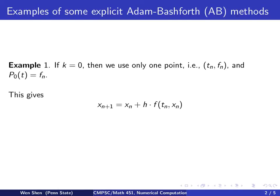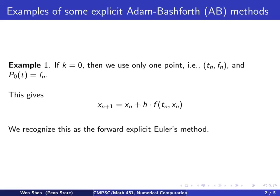Integrating a constant exactly gives you the constant multiplied by the length of your interval, which is h. Writing out the numerical scheme, we recognize this as a first-order forward explicit method — so it's the forward Euler. We are familiar with that one.